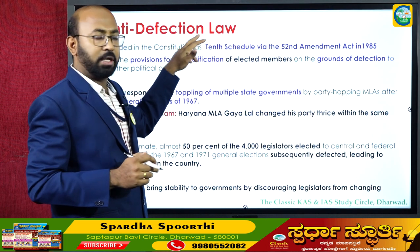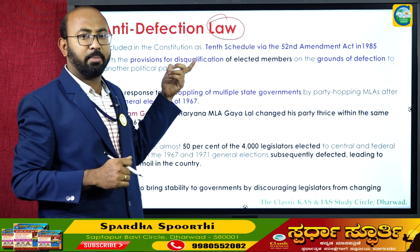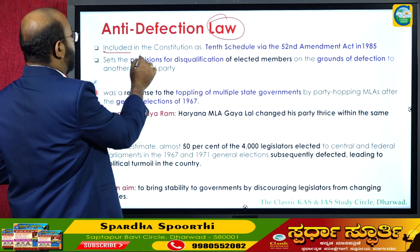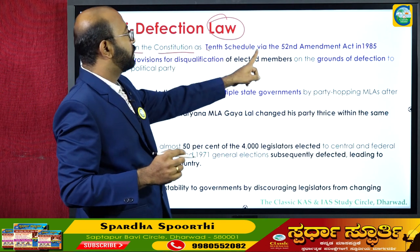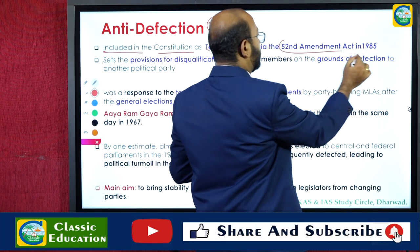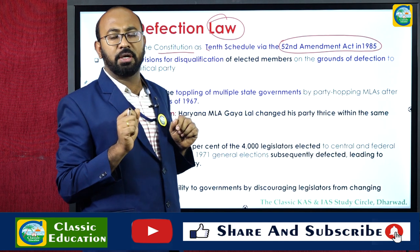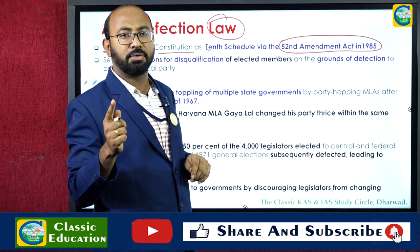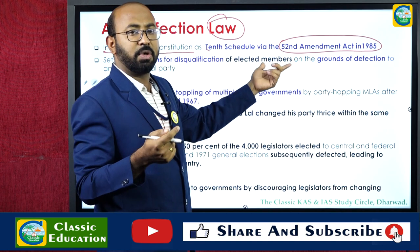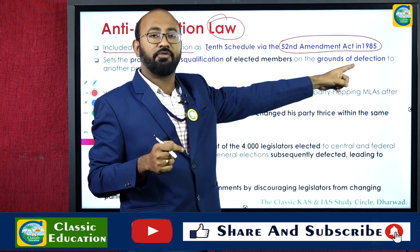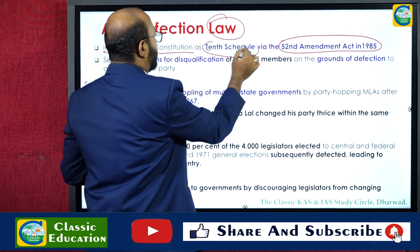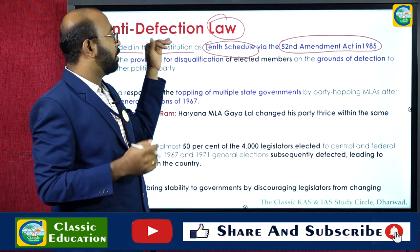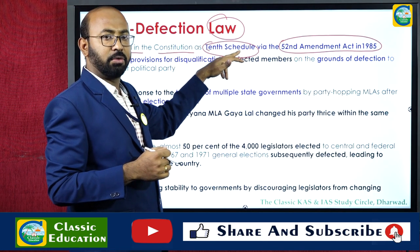The anti-defection law is a law passed by the Parliament of India. It was passed in the year 1985 and was included in the Constitution as the Tenth Schedule via the 52nd Constitutional Amendment Act, 1985. This act is also commonly referred to as the 52nd Amendment Act. The provisions of this law are contained in the 10th Schedule of the Constitution.